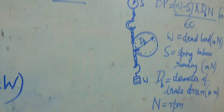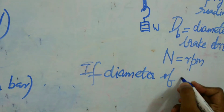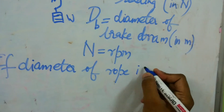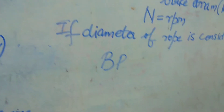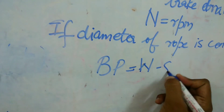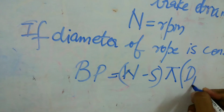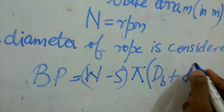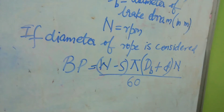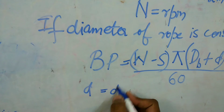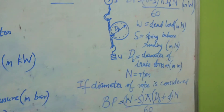In this formula the diameter of the rope is not considered. If the diameter of the rope is considered, then the formula becomes: BP = (W − S) × π × (DB + d) × N / 60, where small d is the diameter of the rope.